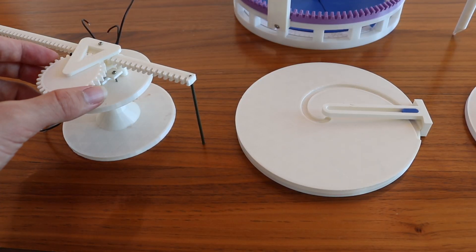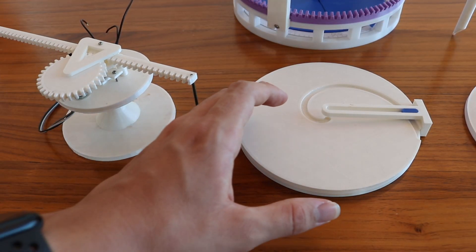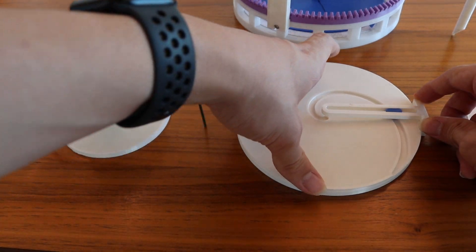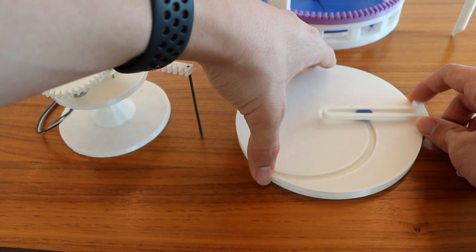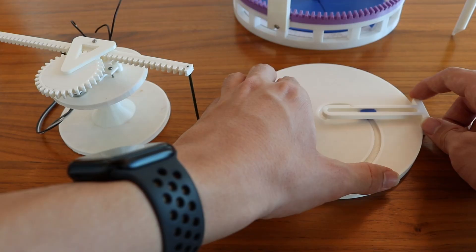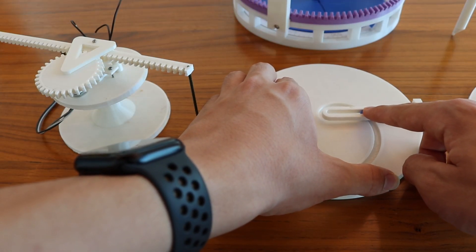The next mechanism takes the rotation of this gear and transfers it to the rotation of this big disc. The groove is cut in such a way that the rotation of this disc represents the radius of this rack, but the position of this pin represents the radius squared.